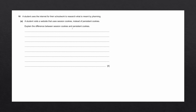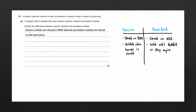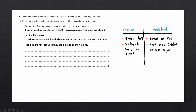Question E asks to explain the difference between session cookies and persistent cookies. Persistent cookies are stored on the user's hard drive until they are deleted or they expire. Session cookies are only valid when the browser is open and are stored in primary memory — usually RAM — and deleted when the browser is closed. For the answer: session cookies are stored in RAM whereas persistent cookies are stored on the hard drive; and session cookies are deleted when the browser is closed whereas persistent cookies are not lost until deleted or they expire. That concludes the walkthrough for this paper.